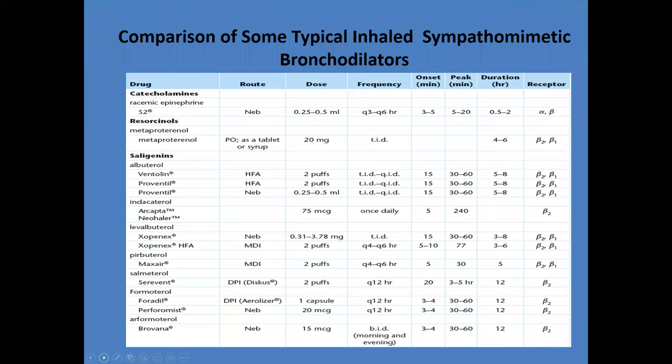Typical inhaled sympathomimetic or adrenergic bronchodilators — for the sake of completeness, I've listed them here. At the very bottom is arformoterol, which is Brovana; special consideration is it needs to be refrigerated, and some hospitals don't even have it on formulary so the patient would need to bring it from home. Starting with racemic epinephrine, which is typically not given for bronchodilation but more for its alpha vasoconstricting effects. Your salbutamol medications account for the highest percentage of adrenergic bronchodilators. If you're a little rusty on MDI or DPI dosages, review those, but don't spend a ton of time on them.